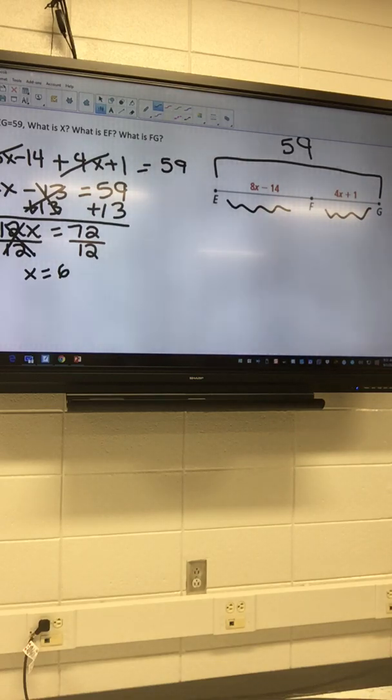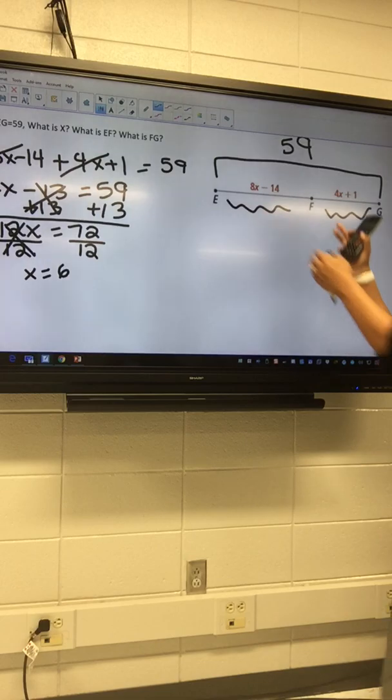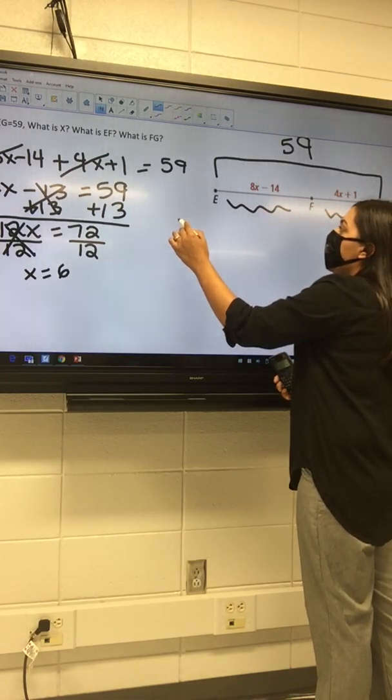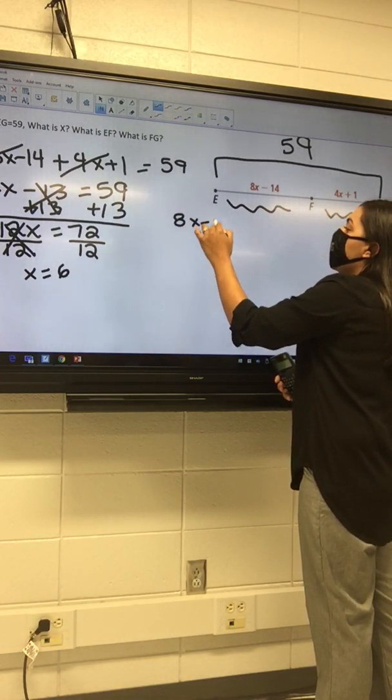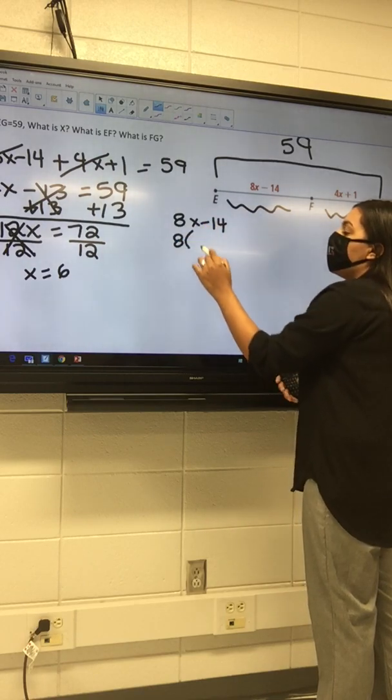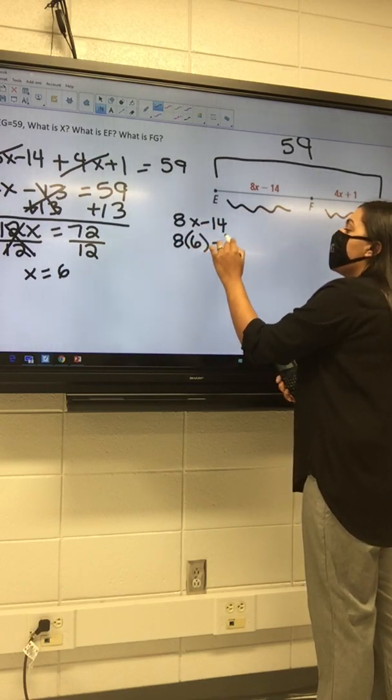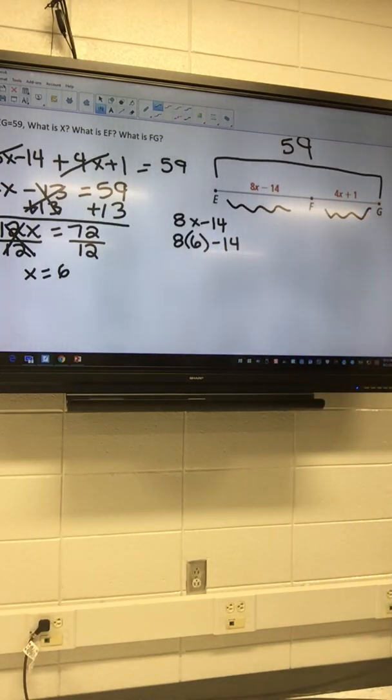So now we know what x equals. What do we need to do? What do we do with that? Most of you guys can get here and then you get lost. So pick one or the other, it does not matter. We can work with EF first. So EF is 8x minus 14, and what is our x value? 6. So I really got 8 times 6 minus 14.